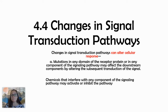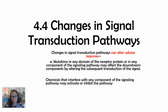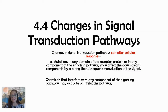In this video, this is my fourth video in the signal transduction pathway series, and here we're going to talk about what happens when a protein in part of that signal transduction pathway is mutated, or also what happens if any chemicals are introduced into the pathway as well.